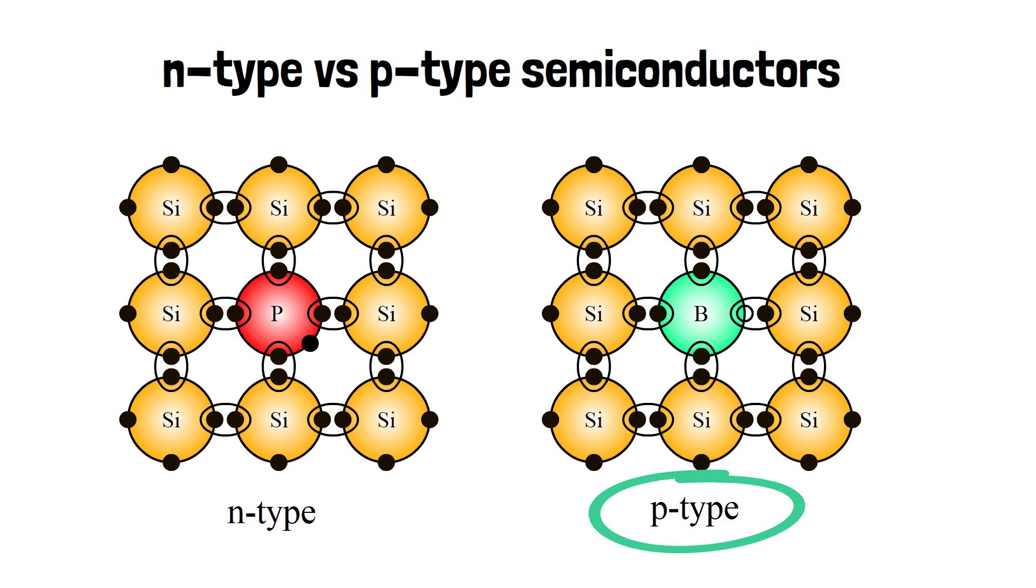P-type silicon is produced by adding atoms such as boron or gallium that have one less electron in their outer energy level than does silicon. Because boron has one less electron than is required to form bonds with the surrounding silicon atoms, an electron vacancy or hole is created.